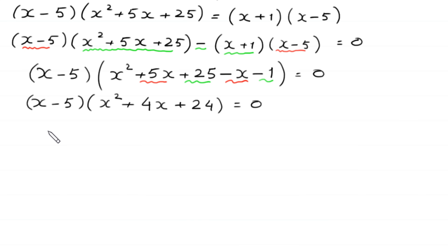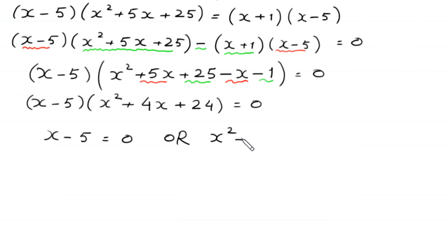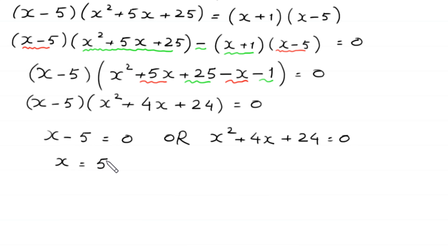So either (x minus 5) equals 0, giving us x equals 5 as the first value, or (x squared plus 4x plus 24) equals 0, from which we find the other two values.